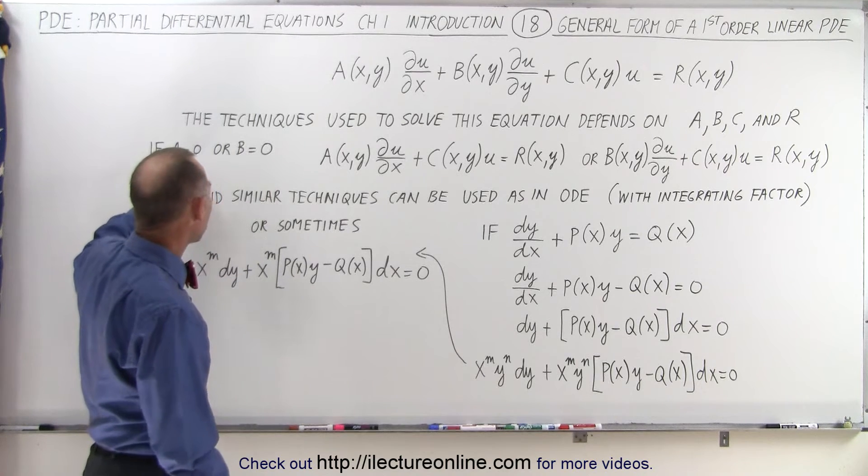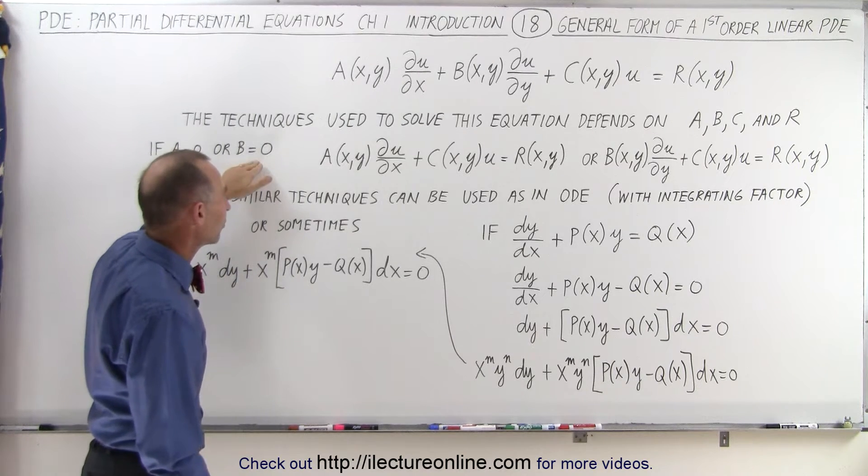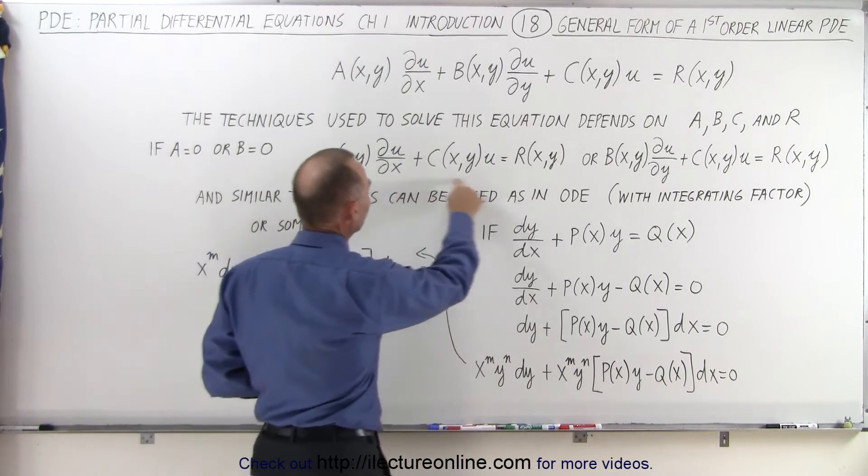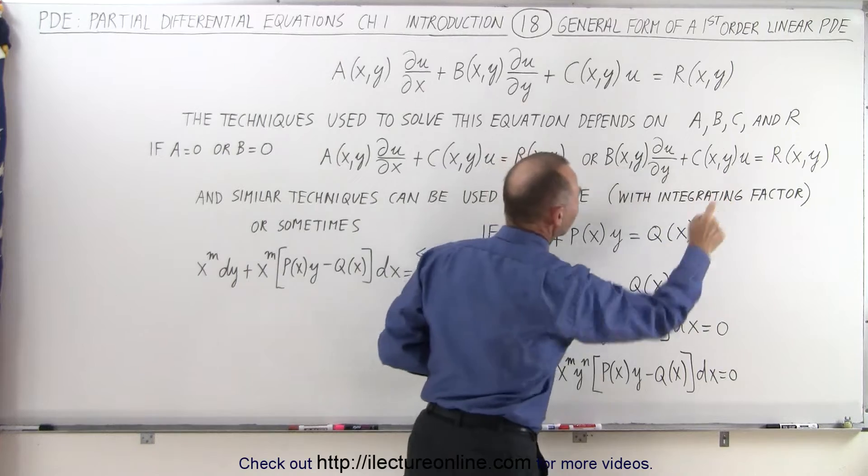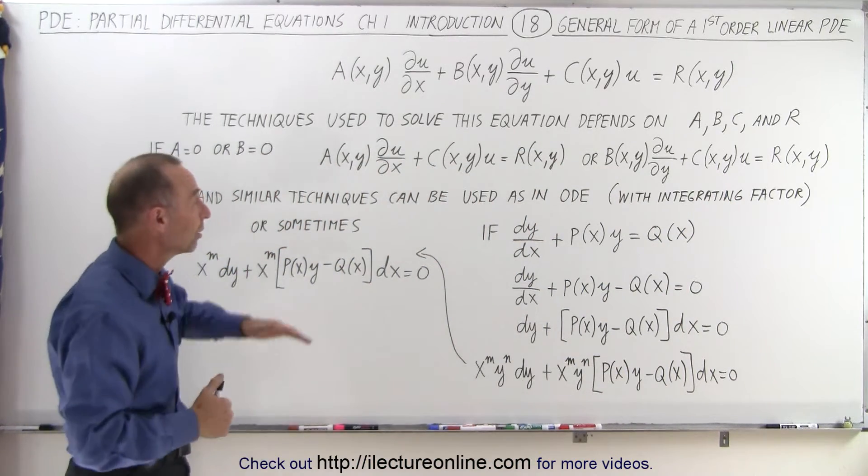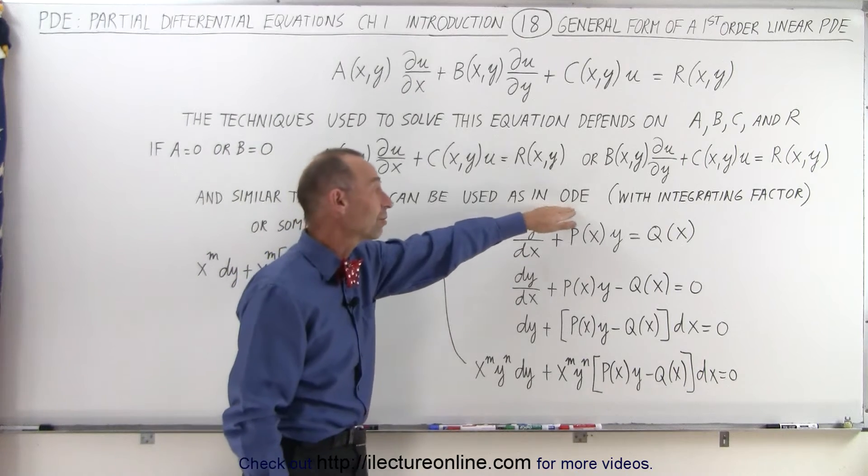But let's say that either a is equal to 0 or b is equal to 0. That kind of simplifies it. Then we end up with an equation that looks like this or an equation that looks like this. And then we can start employing techniques that we're used to using when we had ordinary differential equations.